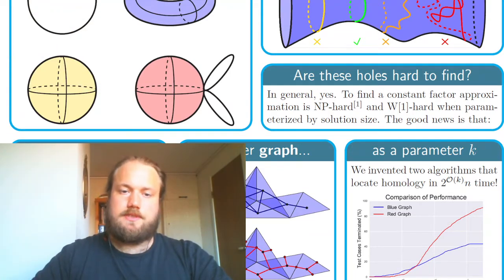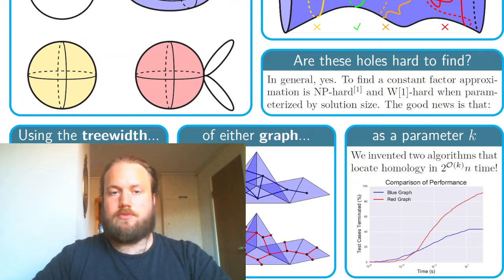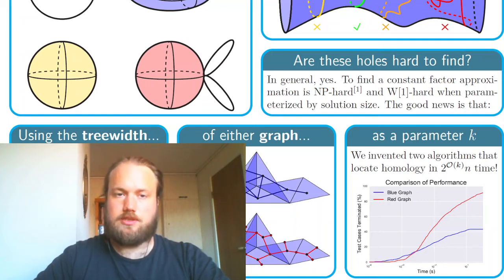Both of these algorithms have a runtime of 2 to the o of k times n where n is the input size of the problem and k is the tree width of either one of the graphs we just discussed. You can see how their implementation performed compared to one another in the plot here showing how many test cases were terminated within the first seconds of runtime for each algorithm based on each graph.